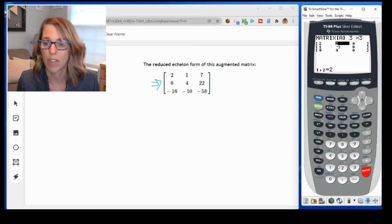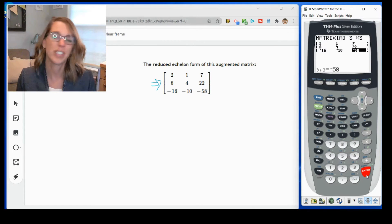Now I go ahead and put my numbers in. So I've got two, one, seven across the top, and then six, four, and 22. And then finally, negative 16, use that negative down at the bottom by the enter key, negative 10, and negative 58. Okay, so I've got my matrix in here.